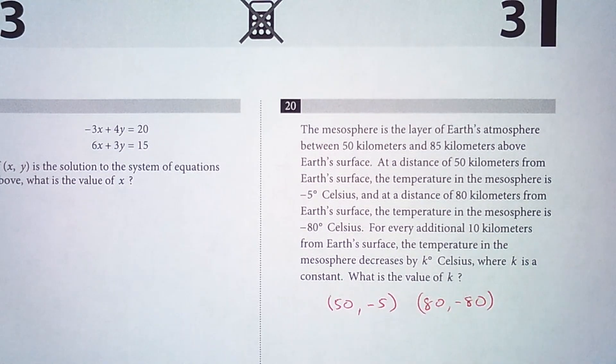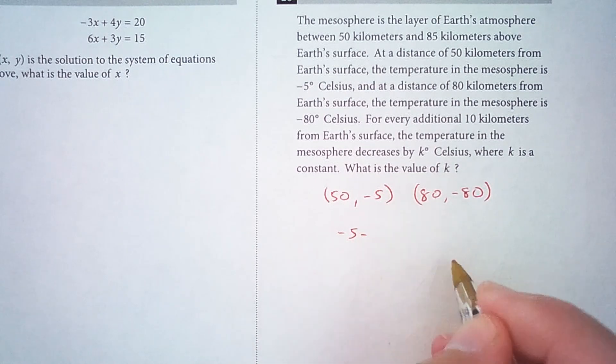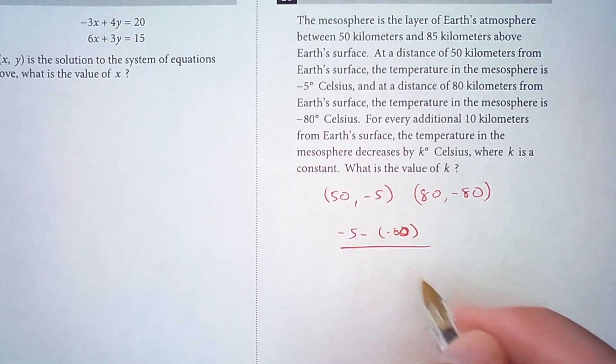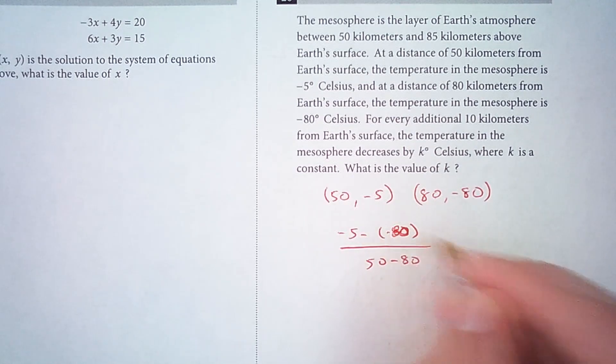Now the slope is y minus y over x minus x, so that's negative 5 minus negative 80 over 50 minus 80. So negative 5 minus negative 80.